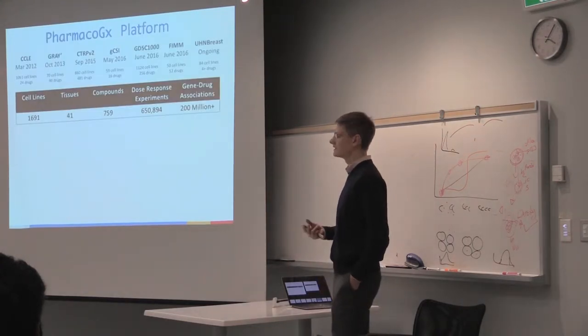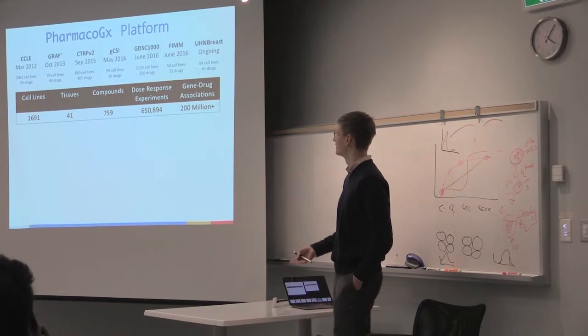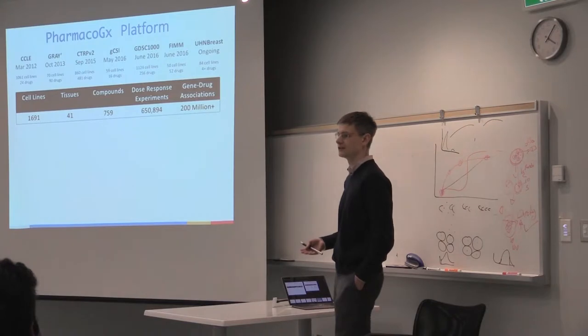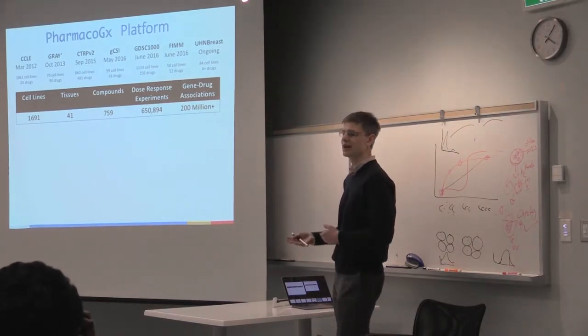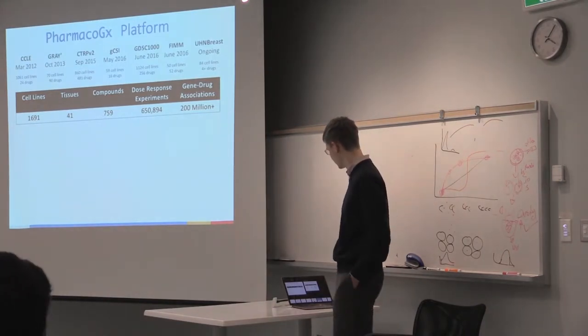Currently, we've taken seven of the largest studies released to date and completely reprocessed, re-annotated, and standardized the pipelines and identifiers. We've come up with a database that contains over 1,600 different cell lines against 750 compounds, with over 650,000 drug sensitivity experiments, and at least 200 million different molecular feature to drug response associations you can investigate.